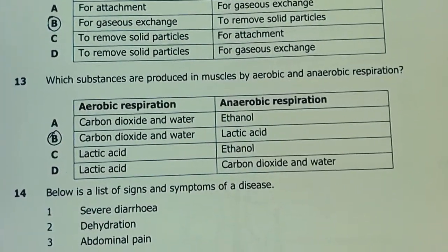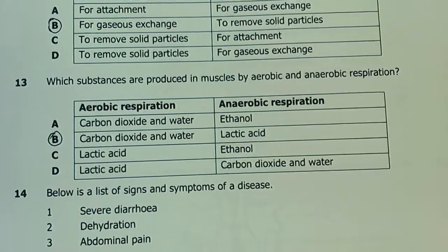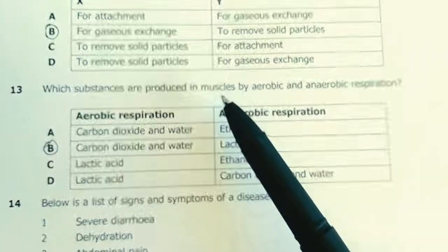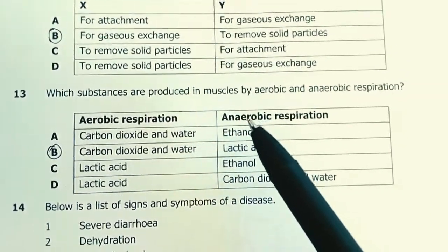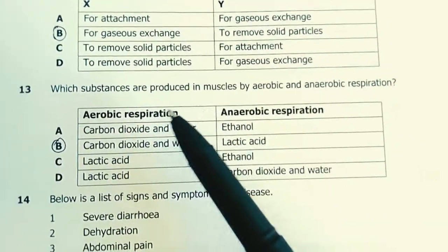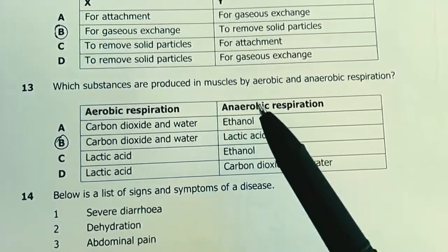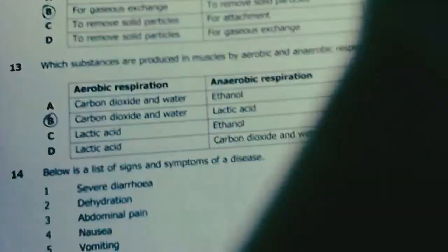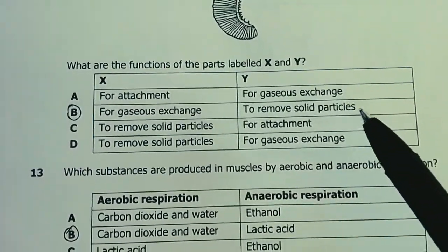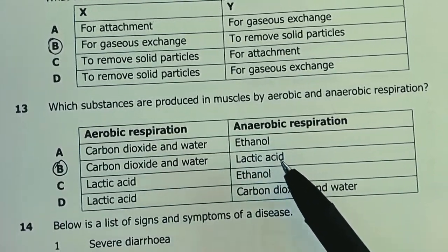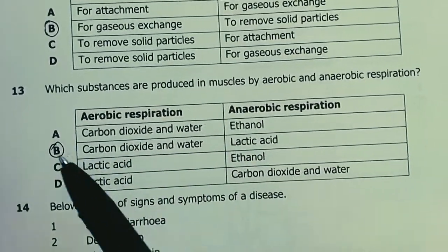Question 13. Which substances are produced in muscles by aerobic and anaerobic respiration? Key word: muscles, meaning it's an animal. Aerobic respiration, whether in plants or animals, produces carbon dioxide and water. But when it comes to anaerobic respiration, in plants ethanol is produced. In animals, lactic acid is produced. Our answer here is B.